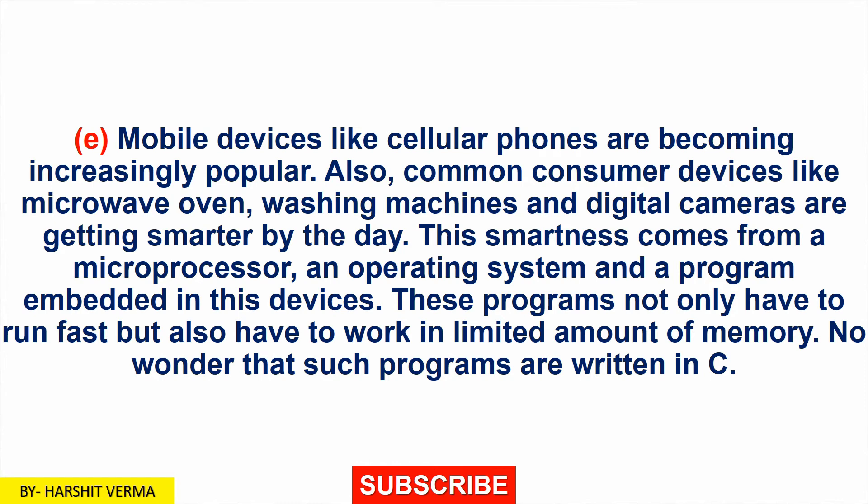Point five: Mobile devices like cellular phones are becoming increasingly popular. Also, common consumer devices like microwave ovens, washing machines, and digital cameras are getting smarter by the day. This smartness comes from a microprocessor, an operating system, and a program embedded in the device. These programs not only have to run fast but also have to work within a limited amount of memory. No wonder such programs are written in C language.